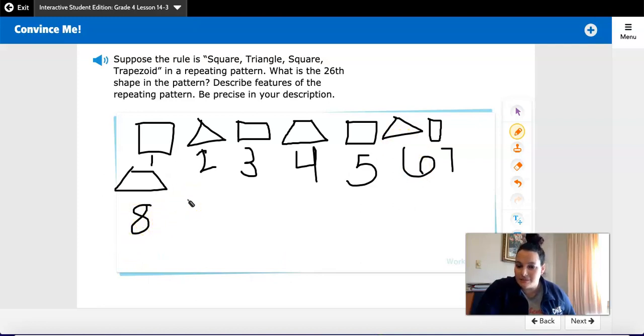But there is something that I can say. 4 and 8 are both multiples of 4. So I know that if it's a multiple of 4, it's going to be a trapezoid.